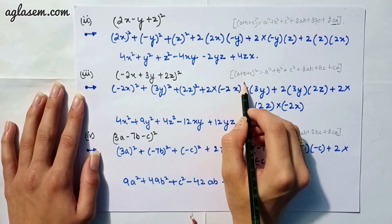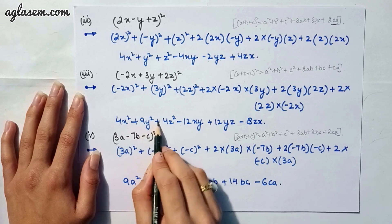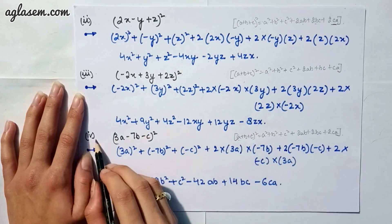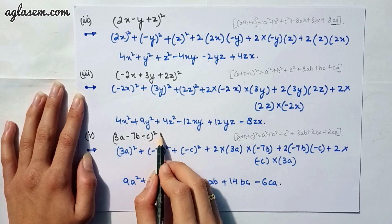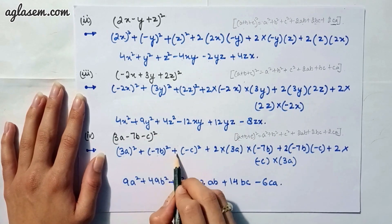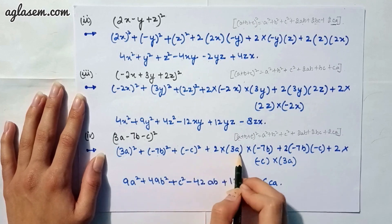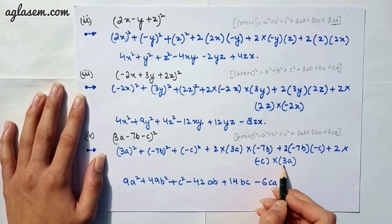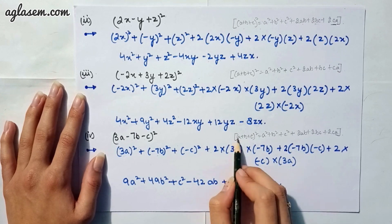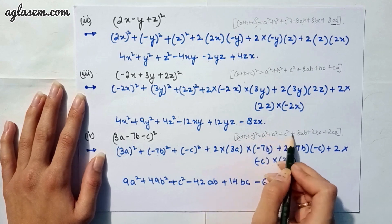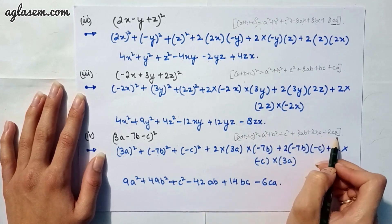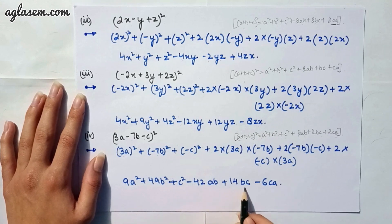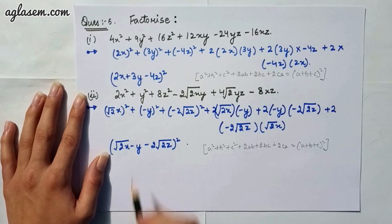Moving to our third part: (−2x + 3y + 2z)². Applying the same formula, the answer is 4x² + 9y² + 4z² − 12xy + 12yz − 8zx. Moving to our fourth part: (3a − 7b − c)². By expanding using (a + b + c)² = a² + b² + c² + 2ab + 2bc + 2ca, the answer is 9a² + 49b² + c² − 42ab + 14bc − 6ca.